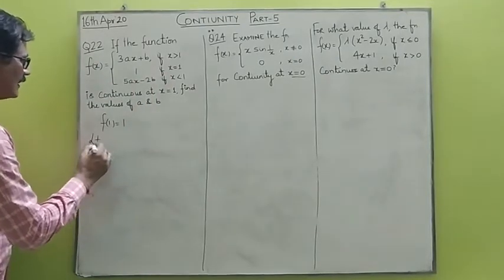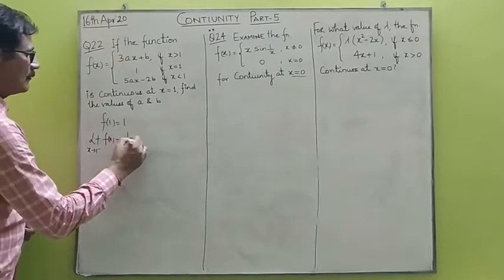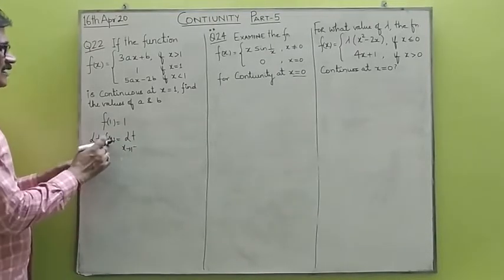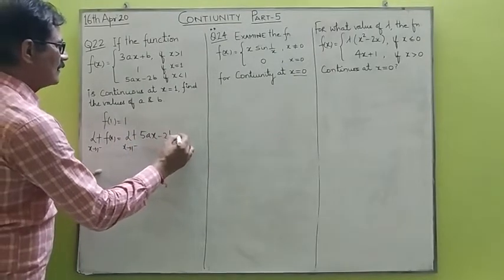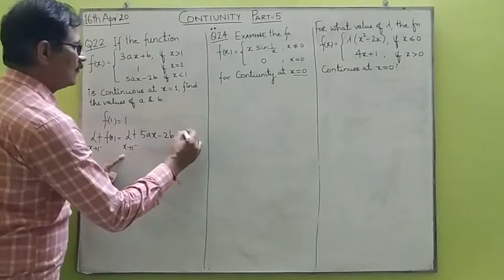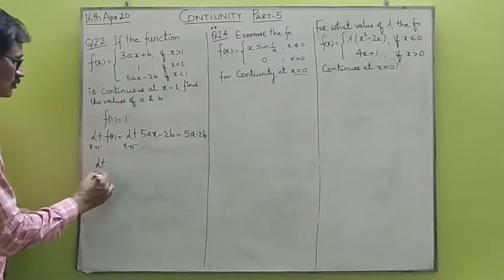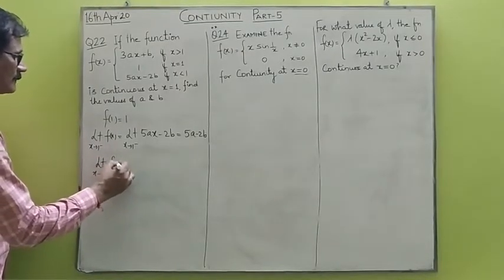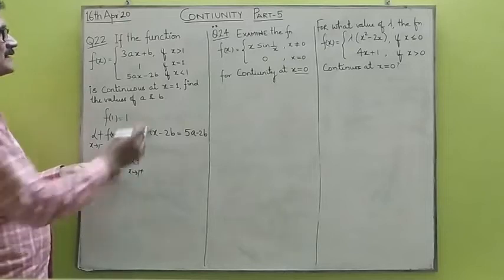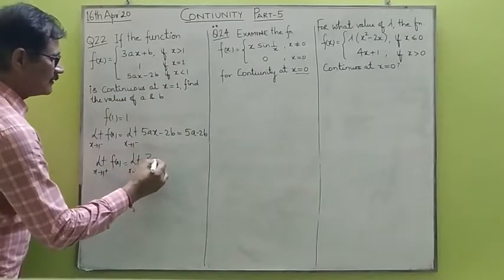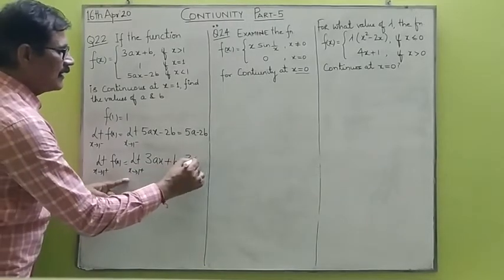Let's find the left hand limit: limit x tending to 1 negative of f(x). The left hand limit will be given by limit x tending to 1 negative, where f(x) is replaced by 5ax minus 2b, and when you write x as 1 it becomes 5a minus 2b. Now let's find the right hand limit: limit x tending to 1 plus of f(x), where the function is replaced by 3ax plus b, and when you substitute x as 1 this becomes 3a plus b.